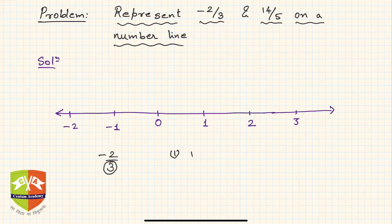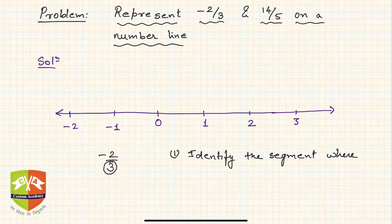Step 1: Identify the segment where the desired number lies. Where does -2/3 lie? The segment is between 0 and -1. How do I know? Because -2/3 is definitely less than 0, but it is definitely more than -1.